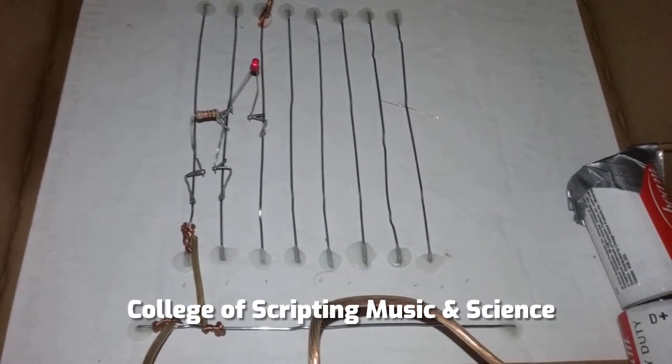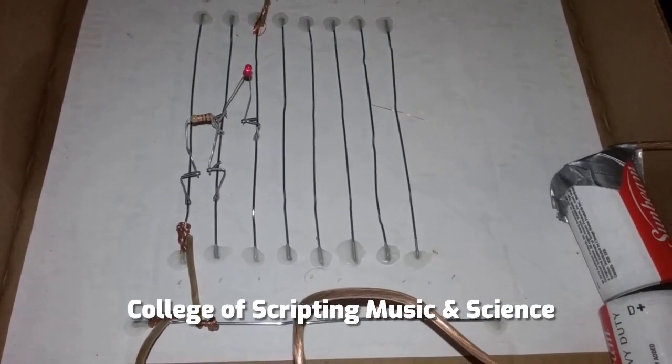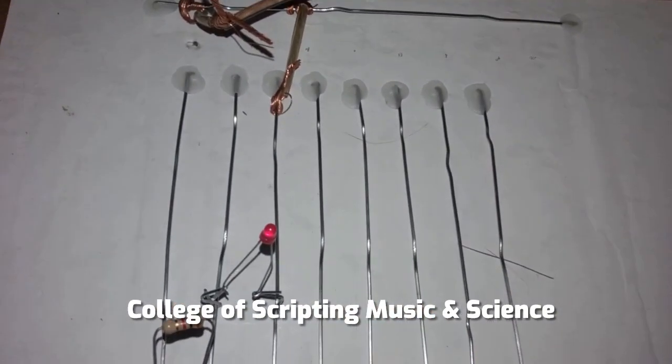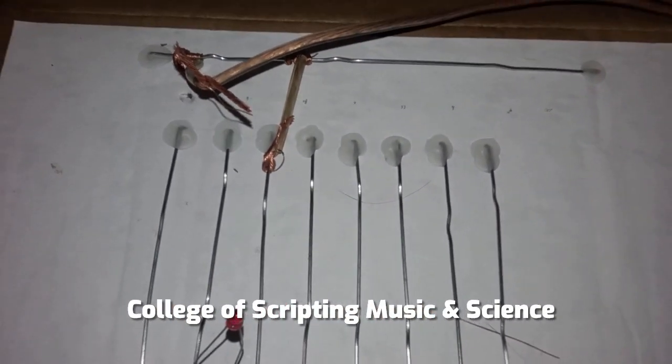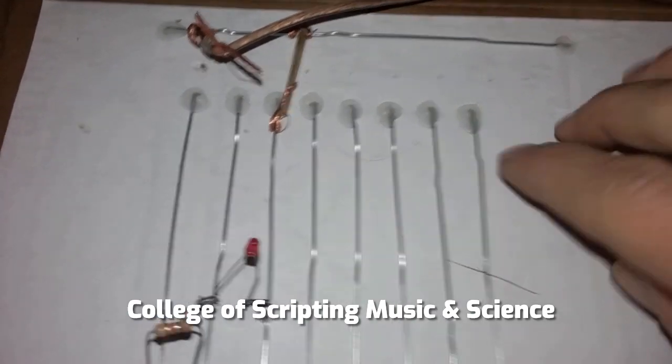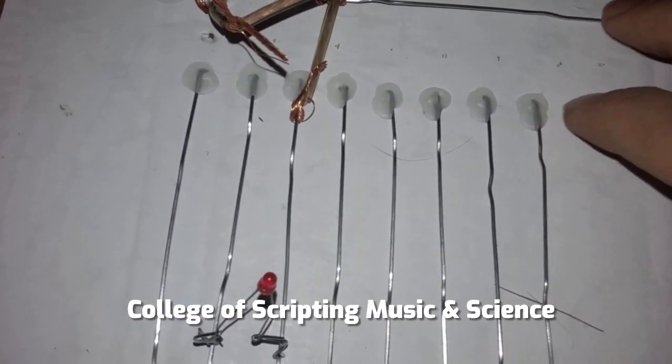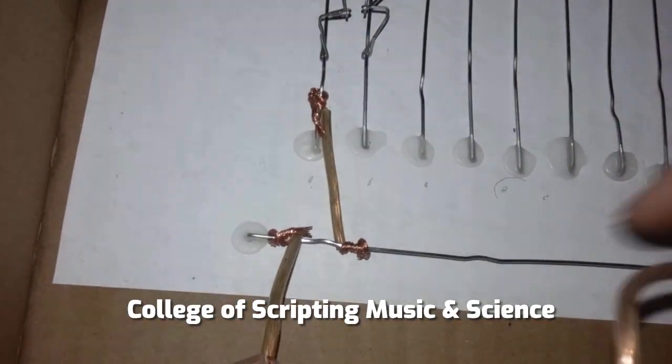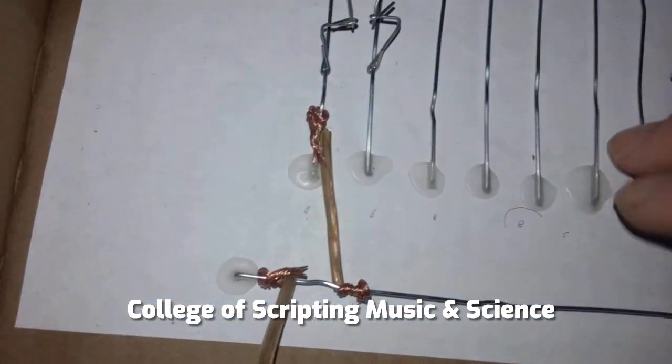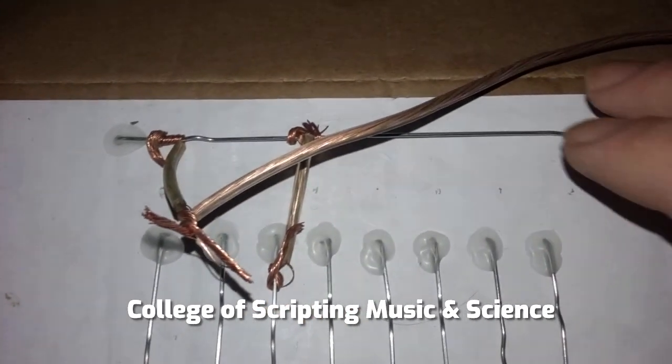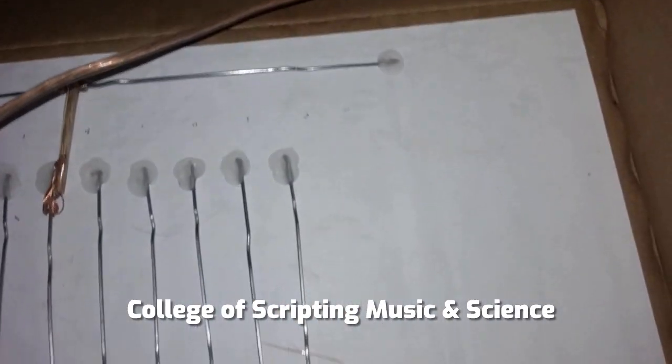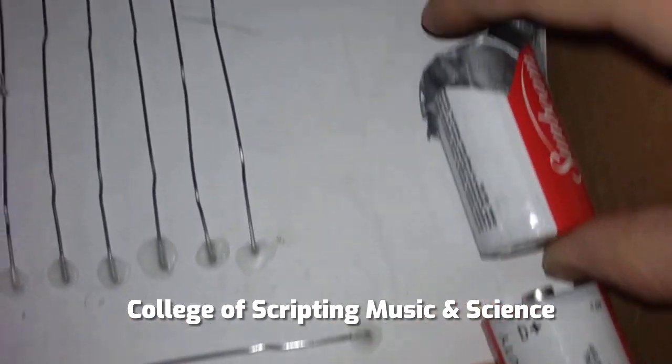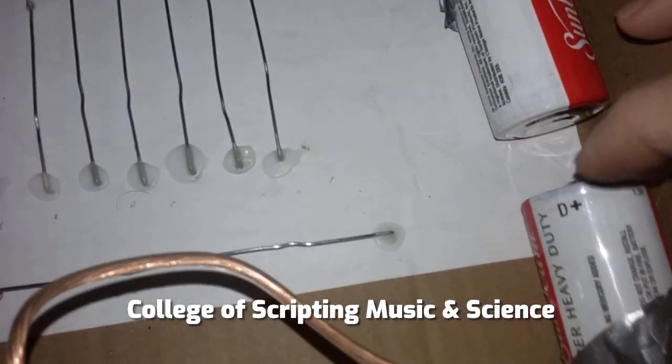Okay, so this is an example of a homemade breadboard using only paper clips, a cardboard box, Elmer's glue, and speaker wire. You have your positive rail on the top which goes to your battery, that's the positive.